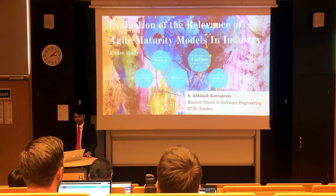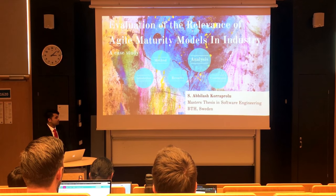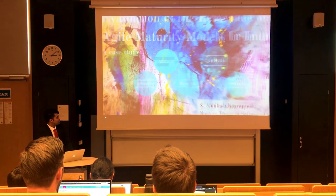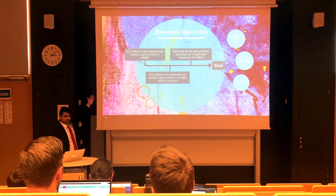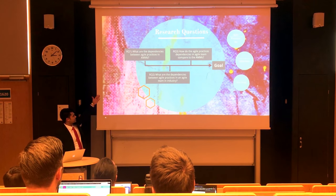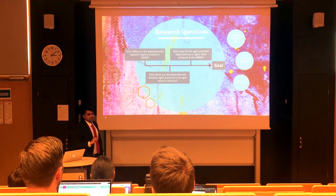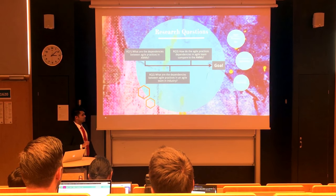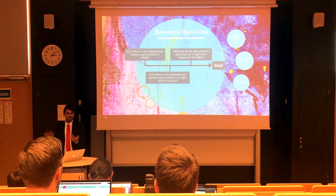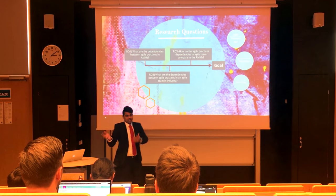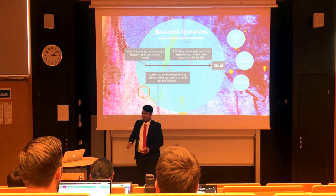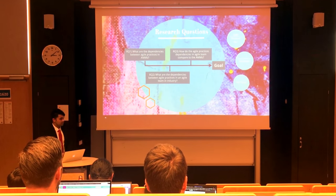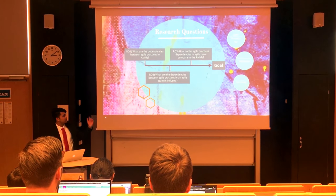That is the goal of my study: to evaluate the relevance of agile maturity models in industry practice. How did I accomplish this? I began by finding agile maturity models in the literature, then finding the dependencies between practices within those models. Then I went to an industry team, conducted a case study, and observed what dependencies they experience and what dynamics are present. I then compared those team dynamics and dependencies with the agile maturity models to see if they address the dependencies and dynamics present in the team.